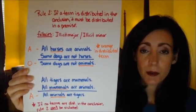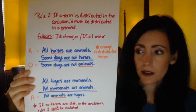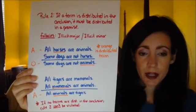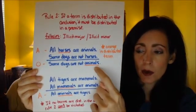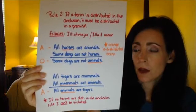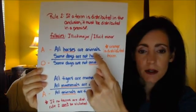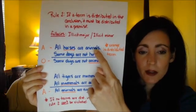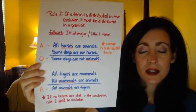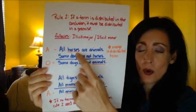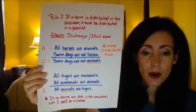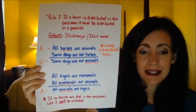The fallacy can either be an illicit major or an illicit minor. In the first example, the conclusion says 'some dogs are not animals' — this is an O statement, and in O statements the predicate is the distributed term, so that would be 'animals.' Looking at the premises, 'animals' appears in the first premise as an A statement, where the subject 'horses' is distributed — not 'animals.' So this commits the fallacy of the illicit major, because 'animals' is the major term.